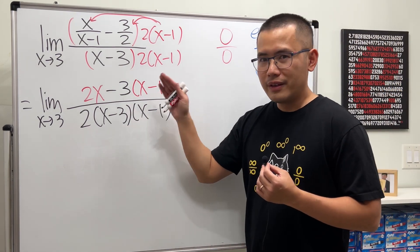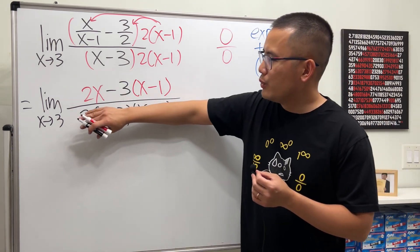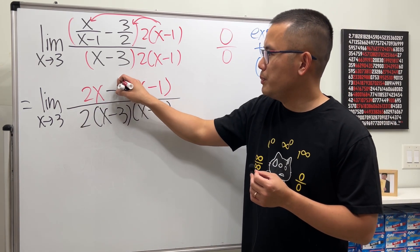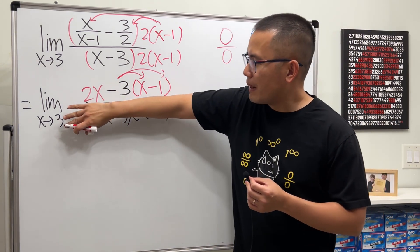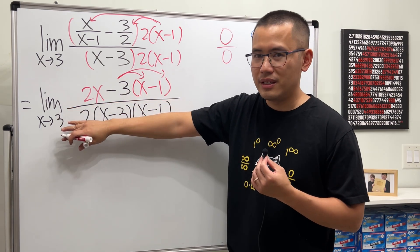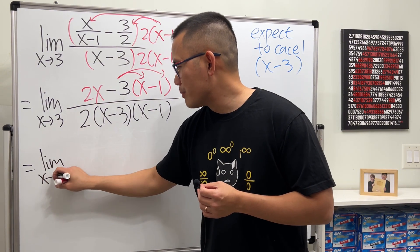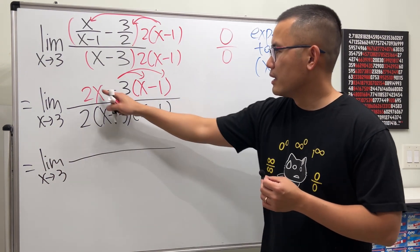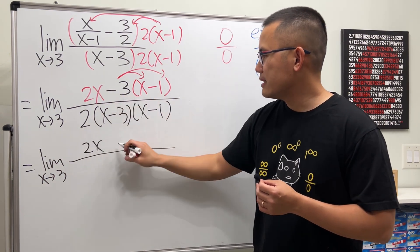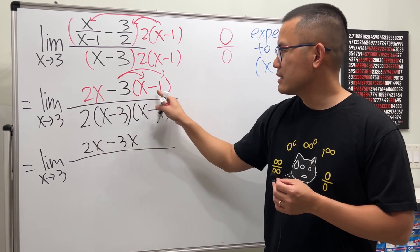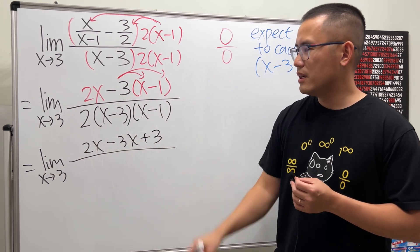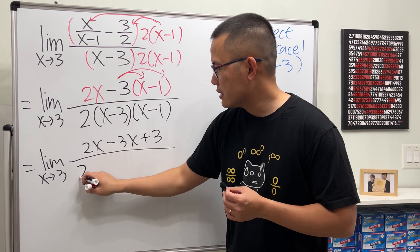All right, so the correct way to do it is that you are supposed to distribute the top, combine like terms on the top before you can do any cancellations. Have a look, limit x approaches 3. This is just 2x, and then minus 3x minus, minus minus or becomes plus 3.